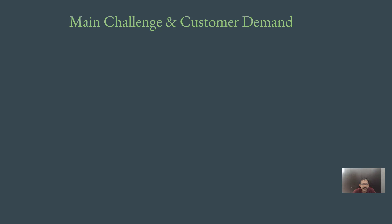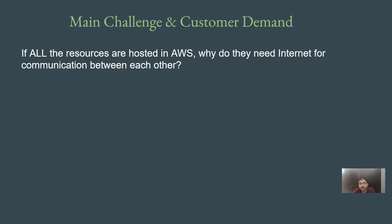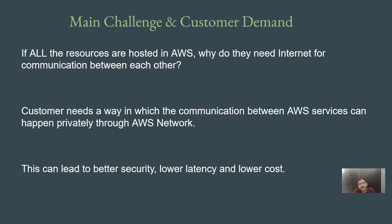Based on these challenges, there was a lot of customer demand. The question that arose was: if all resources are hosted in AWS, why do they need the internet for communication between each other? If the EC2 instance is in AWS, and the S3 bucket or DynamoDB table is in AWS, why do you need the internet for inter-communication? Why can't AWS use its own private network? Customers needed communication to happen privately through the AWS network, not the internet, because everything is hosted by AWS itself.